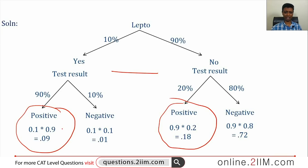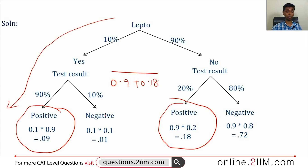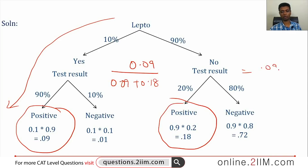Since the result is positive, my denominator — my superset — is just 0.09 + 0.18 = 0.27. Out of that, I want the probability of having reached the endpoint through the route where the person does have lepto, which is 0.09. So the answer is 0.09 / 0.27 = 1/3. This is a very important result based on conditional probability and an idea called Bayes' theorem.